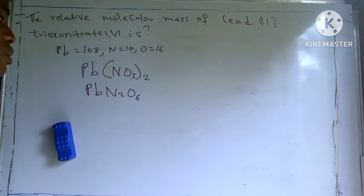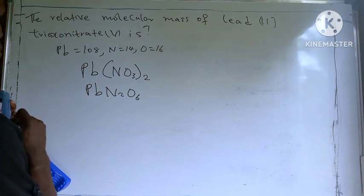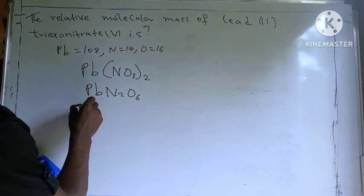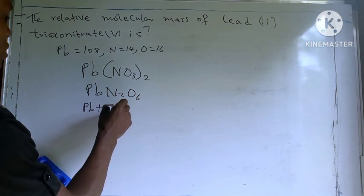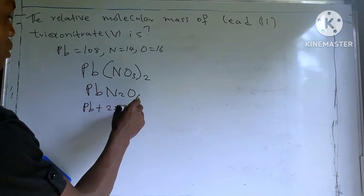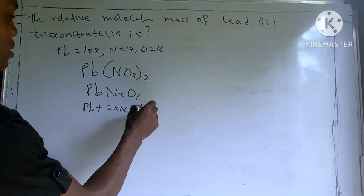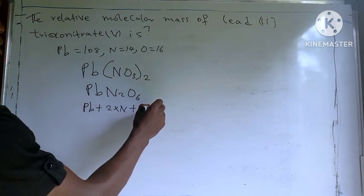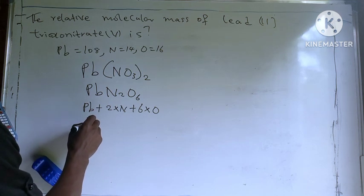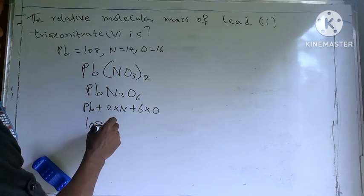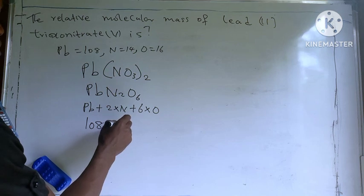So this is what we are going to do: lead plus two times nitrogen plus six times oxygen. So lead is 108, 108 plus two times nitrogen, two times nitrogen is given as 14.